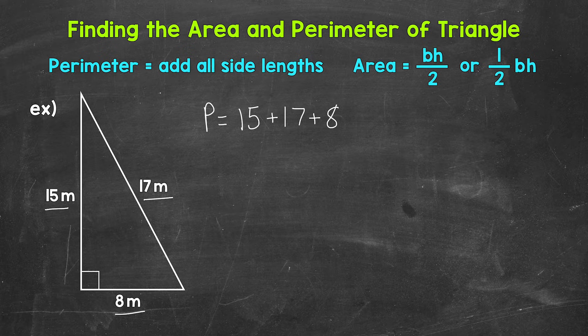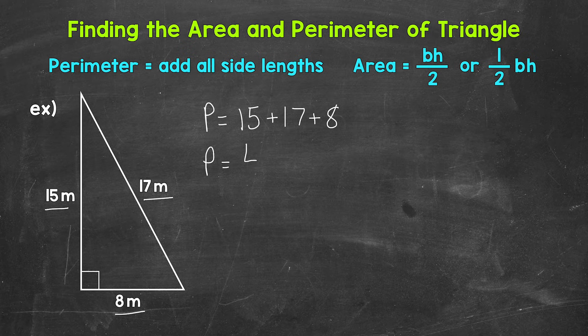So let's start with 15 plus 17, that gives us 32, plus 8 gives us 40. So the perimeter equals 40 meters.